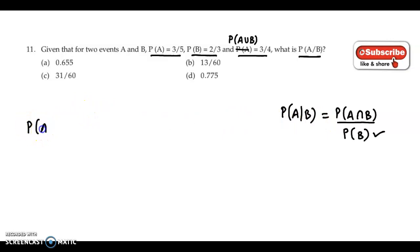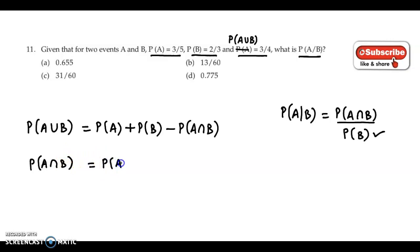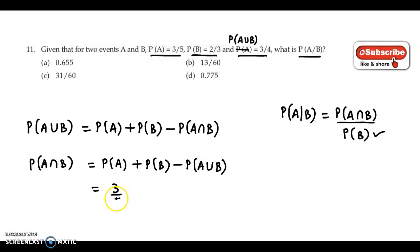Now, we know that the addition theorem states: probability of A union B is equal to P of A plus P of B minus P of A intersection B. Ab yahan par intersection chala jayega left-hand side mein, and right-hand side par aayega P of A plus P of B minus P of A union B. Ab yeh teeno values available hain, so let us substitute.